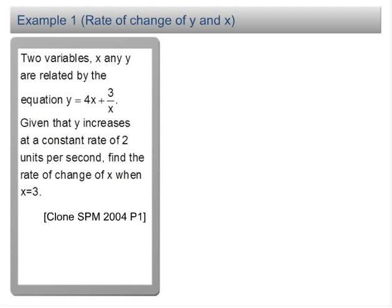Two variables x and y are related by the equation y equals 4x plus 3 over x. Given that y increases at a constant rate of 2 units per second, we have dy over dt equal to 2.